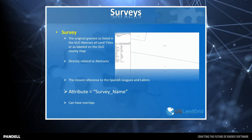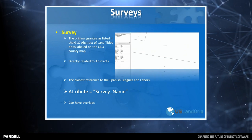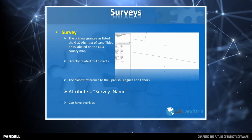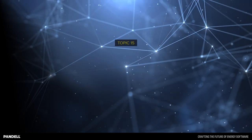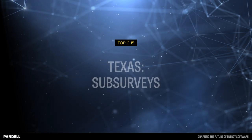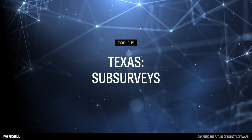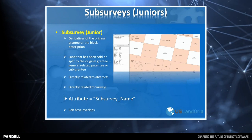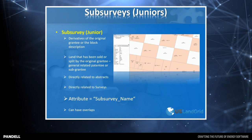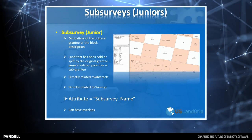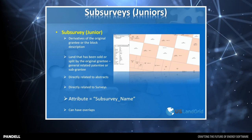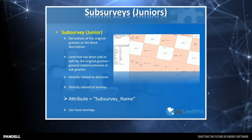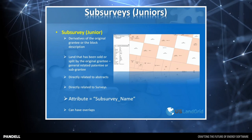Surveys are the original grantees as listed by the GLO when it comes to the land title. They're directly related to abstracts and are probably the closest reference we have today to the Spanish leagues and labors. In our data, you'll find them as a separate layer and also under the attribute value or survey name. Surveys can have overlaps — sub-surveys are usually derivatives of the original survey. You tend to find sub-surveys occur when a family divides the land among many relatives. Sub-surveys directly relate to abstracts, and the attribute value you're looking for is sub-survey name. They can have overlaps as well.